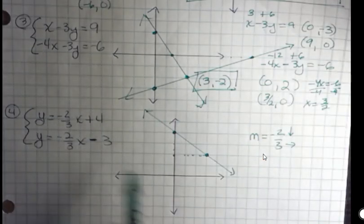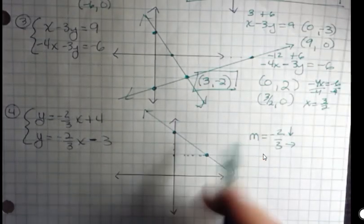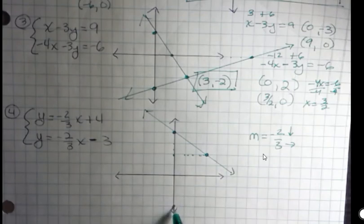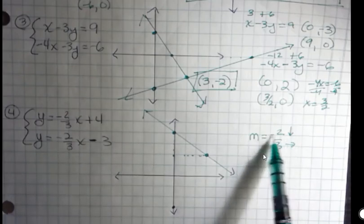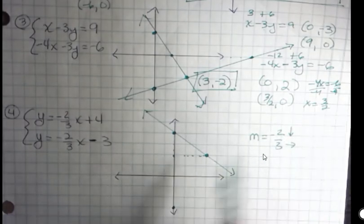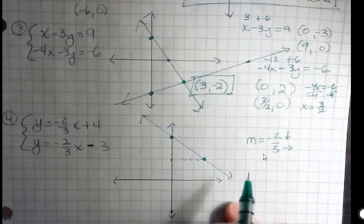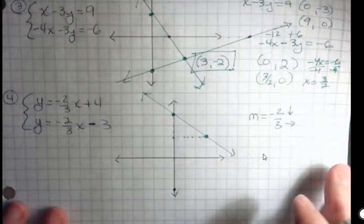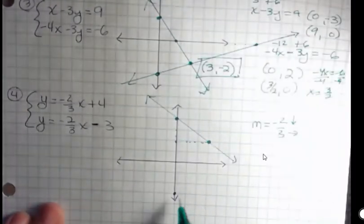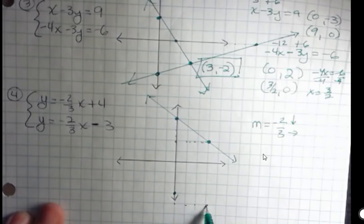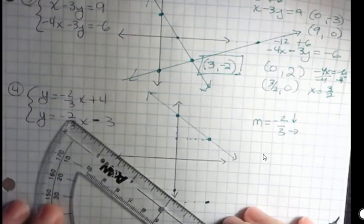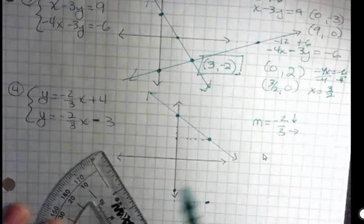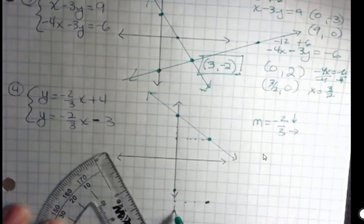All right? And then for my second one, I have a y-intercept of negative 3. 1, 2, 3. But notice my slope is the same. Negative 2 thirds. Negative 2 down, 3 over. So I'm going to go down 2 and over 3. And I'm going to connect those points up. Down 2 and over 3. Here we go.